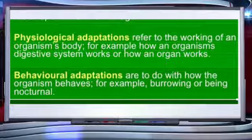The second type of adaptation is physiological adaptation. It is an internal body process to regulate and maintain homeostasis for an organism to survive in the environment it exists in. For example, temperature regulation, release of toxins, and release of antifreeze proteins.